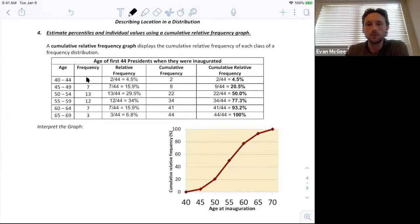So there were two presidents who were inaugurated between 44. That's 4.5%, a cumulative frequency of 2. Now, if we jump to the next age group, 45 to 49, there were 7 in that group, which would be a cumulative total of 9, which would be 20.5%. As we increase their age, we're adding in 13 new people, which is 29.5%, and we're adding it to the previous two. So 13 plus 7 plus 2 gives us this 22 total frequency, and 22 out of 44 would be 50%. So it's actually going to be our median value right there.